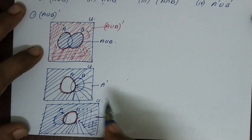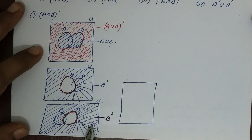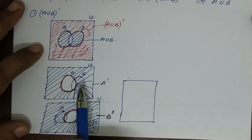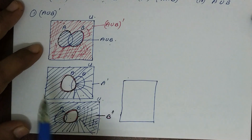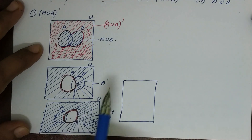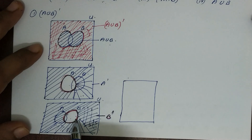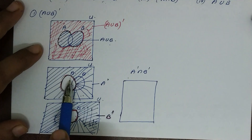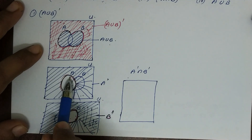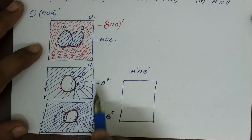A complement intersection B complement: we take the intersection of A complement and B complement. A complement is shaded, B complement is shaded, and their common portion — where both shadings overlap — gives A complement intersection B complement.